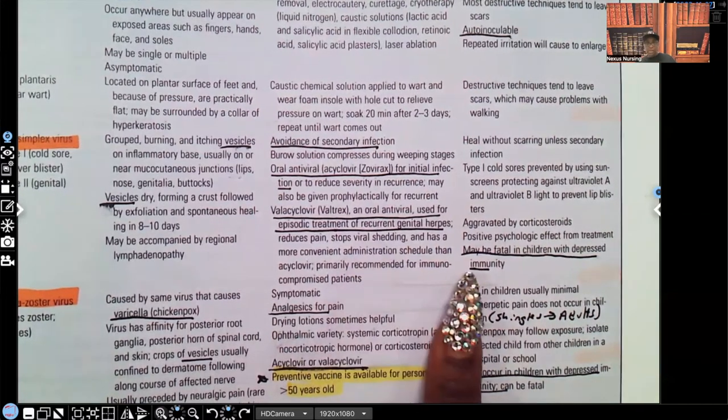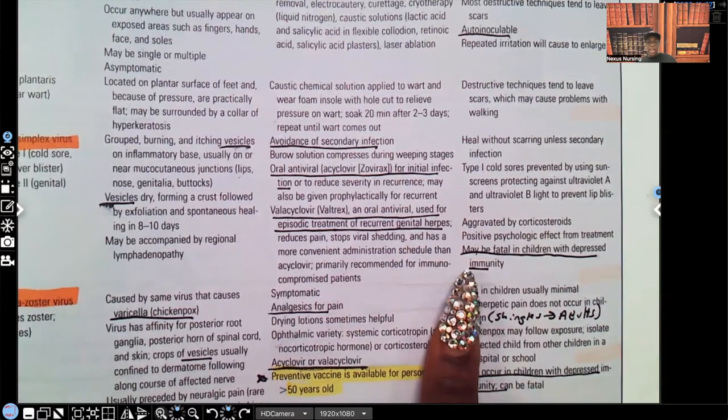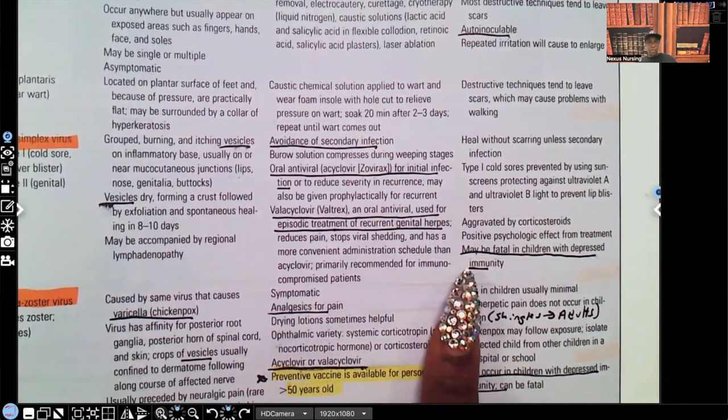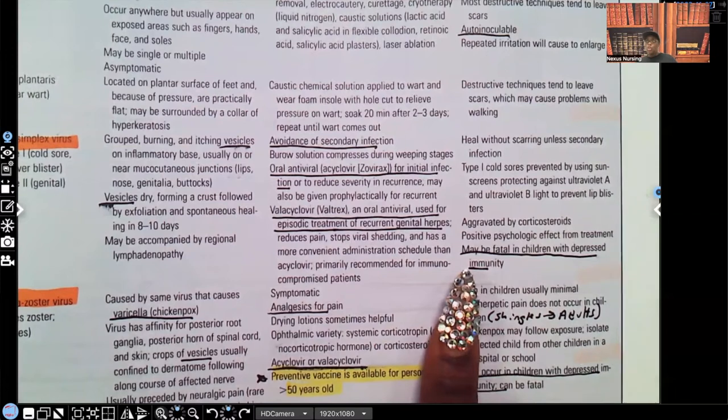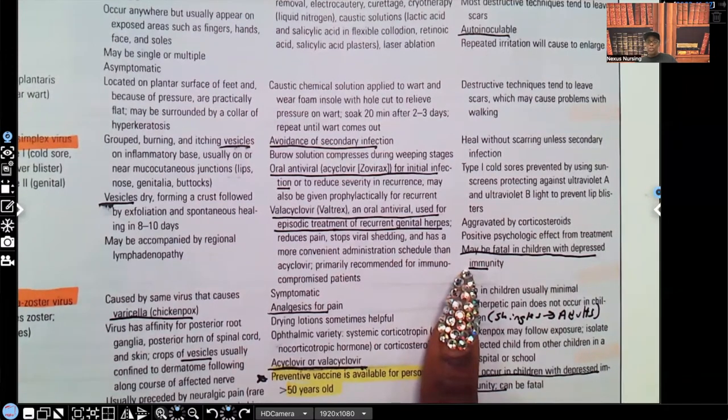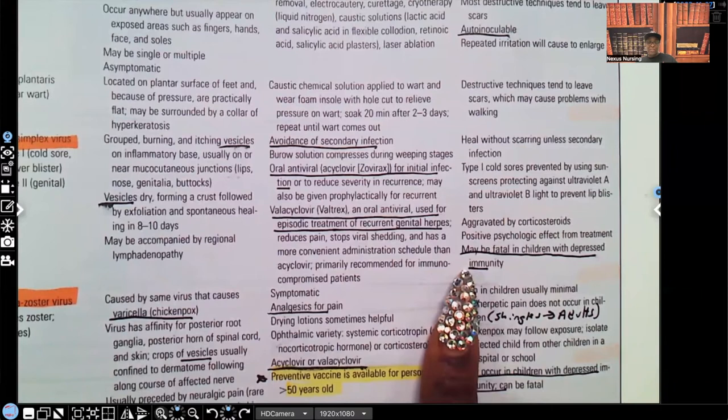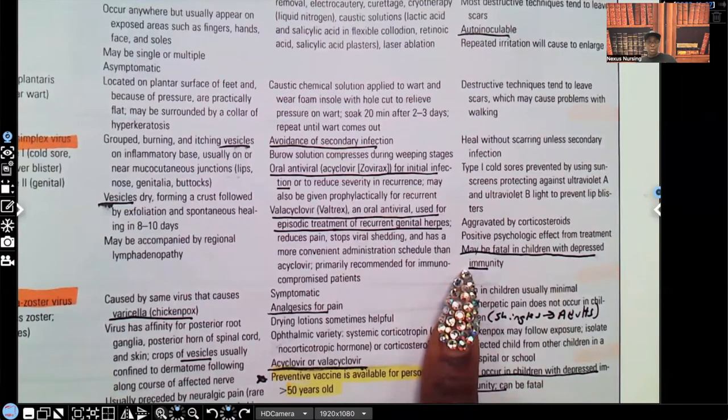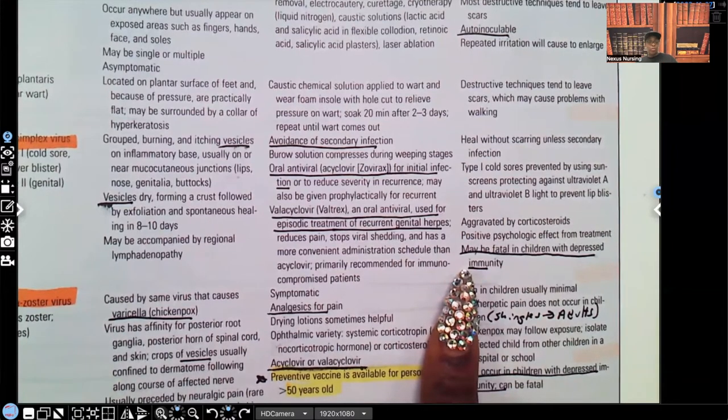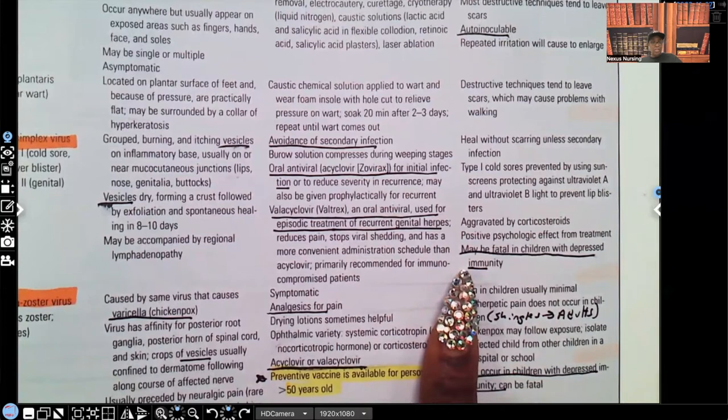Comments. Look at this. May be fatal in children with depressed immunity. What kind of children we talk about? Children who are organ transplant recipients and they're on high dose steroids so their bodies don't reject the transplant, right? Children with HIV, AIDS, children who are on chemo or radiation, anything that would make that child immunocompromised.